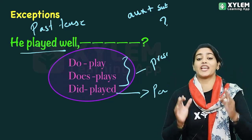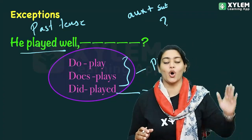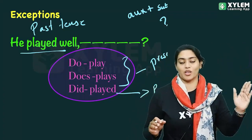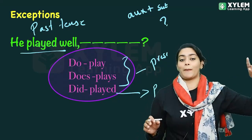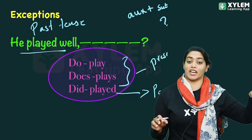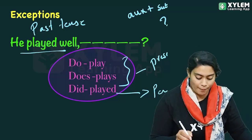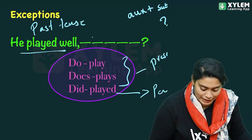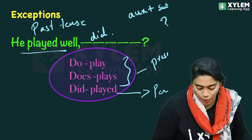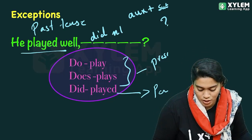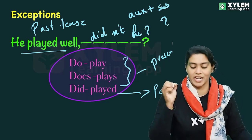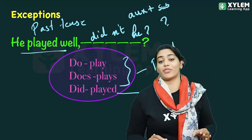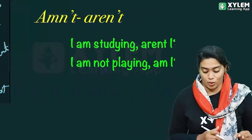'He played well' — the sentence is positive, so the tag must be negative. Since 'played' is past tense, we use 'did.' Then we add 'not' — making 'didn't.' So the tag is 'didn't he.' That gives us: 'He played well, didn't he?'